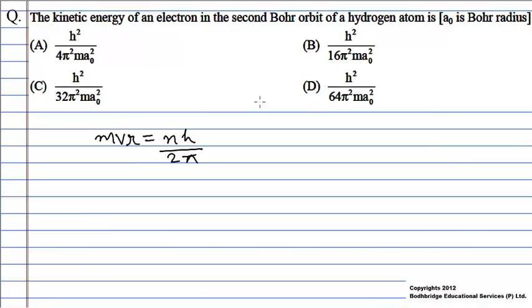Also, the radius of the orbit is given by n² r₀ upon z, where r₀ is the Bohr radius and z is the atomic number. For this question, r₀ equals a₀ and for the hydrogen atom z equals 1, as the atomic number of hydrogen is 1.